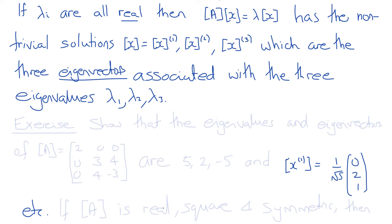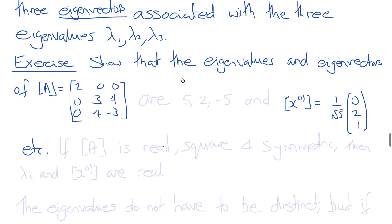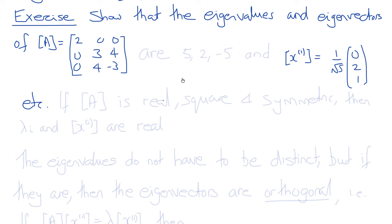As an exercise, find the eigenvalues and eigenvectors of the matrix A with components [2, 0, 0; 0, 0, 3; 4, 4, −3] — you can refresh your memory about this process. It is easy to show that the eigenvalues are 5, 2, and −5. The first eigenvector is (1/√5)·(0, 2, 1); I'll let you work out the other two. Notice the components (0, 2, 1) are divided by √5 so that the eigenvector is normalized, which is conventional.